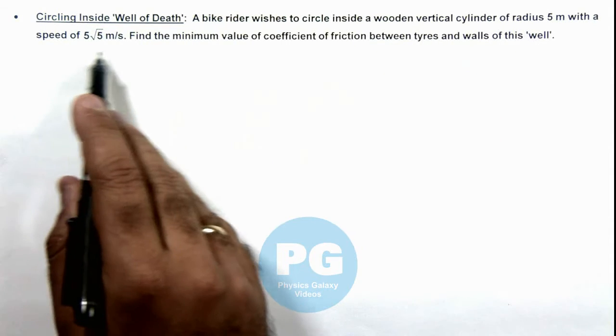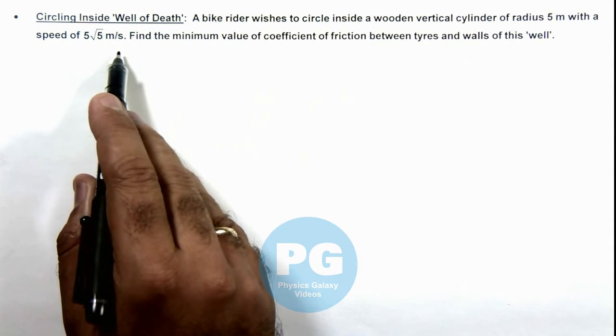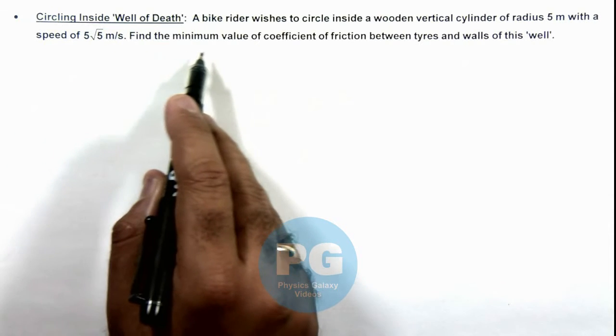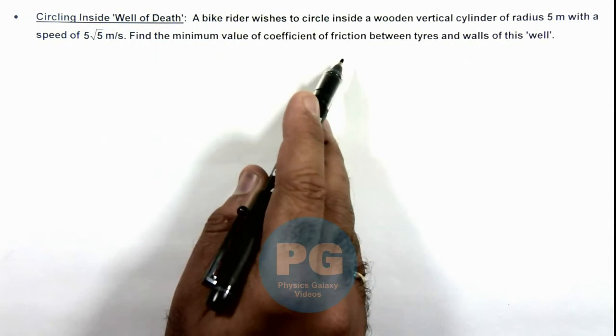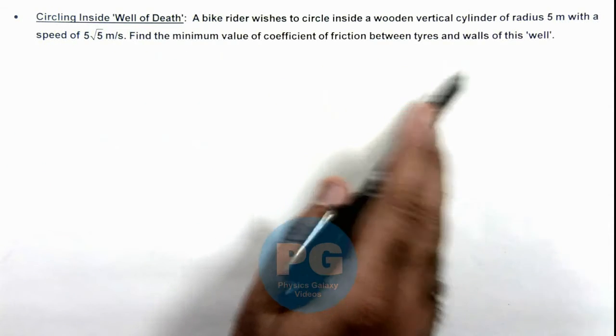With a speed of 5 root 5 meters per second, and we are required to find the minimum value of coefficient of friction between tires and walls of this well.